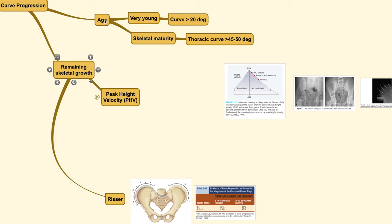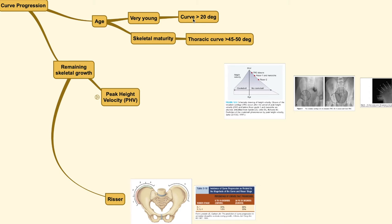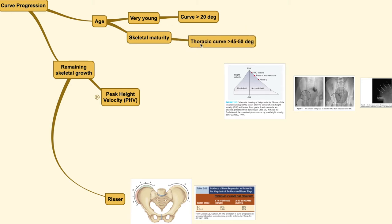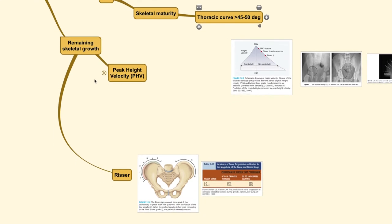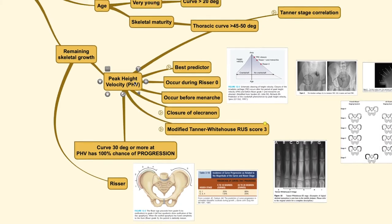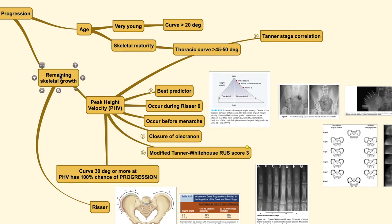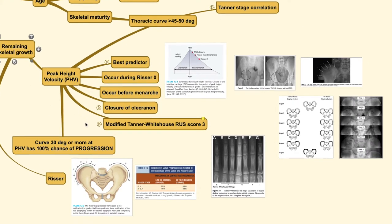When a patient presents at a very young age with a curve more than 20 degrees, or a skeletally mature patient with a curve more than 45 to 50 degrees, the curve will most likely progress. To predict how much progression will occur, we need to know how much the patient is still growing — the remaining skeletal growth. There are several methods to predict this.